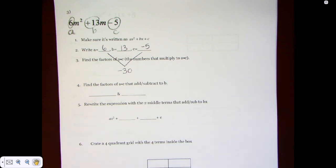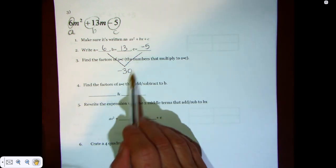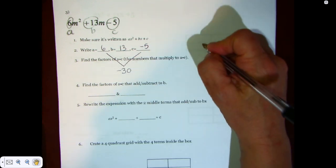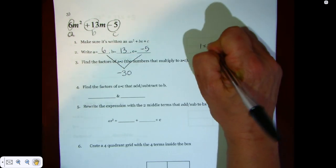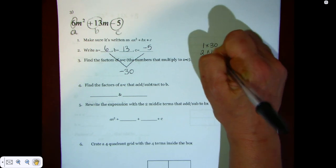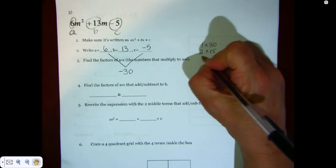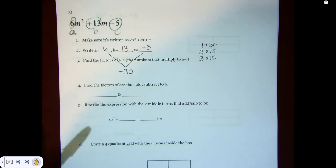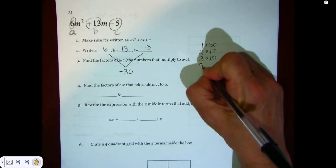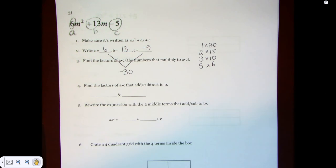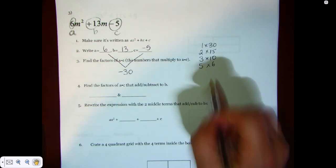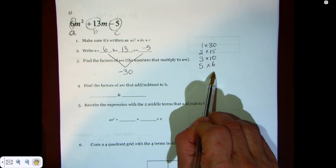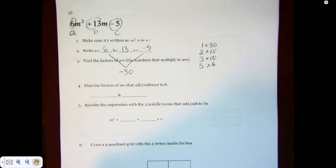We want to find the factors of negative 30 that add up to 13. So let's start by writing the factors of 30. We have 1 times 30, 2 times 15, 3 times 10, 5 times 6. There are no other factors because when we go to 6 times 5, it's the same.